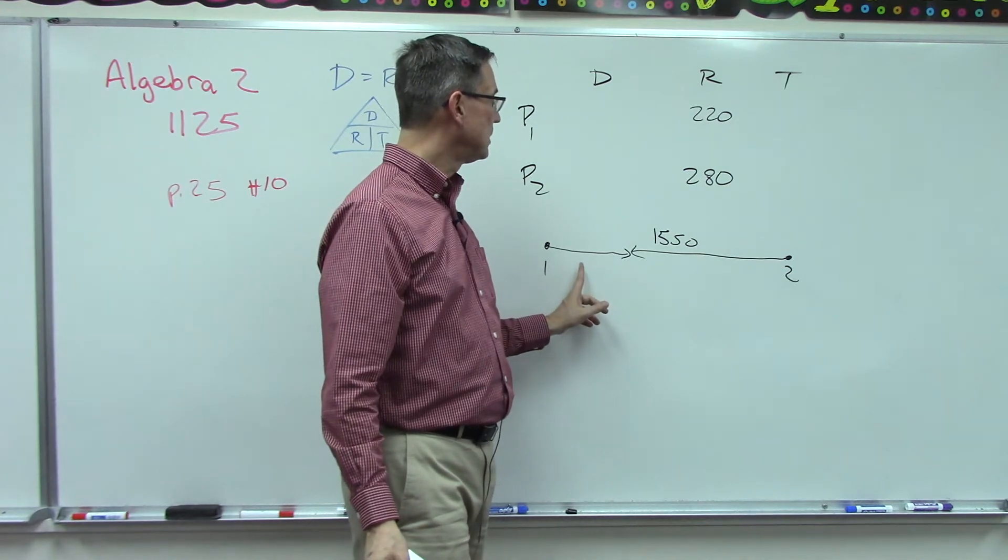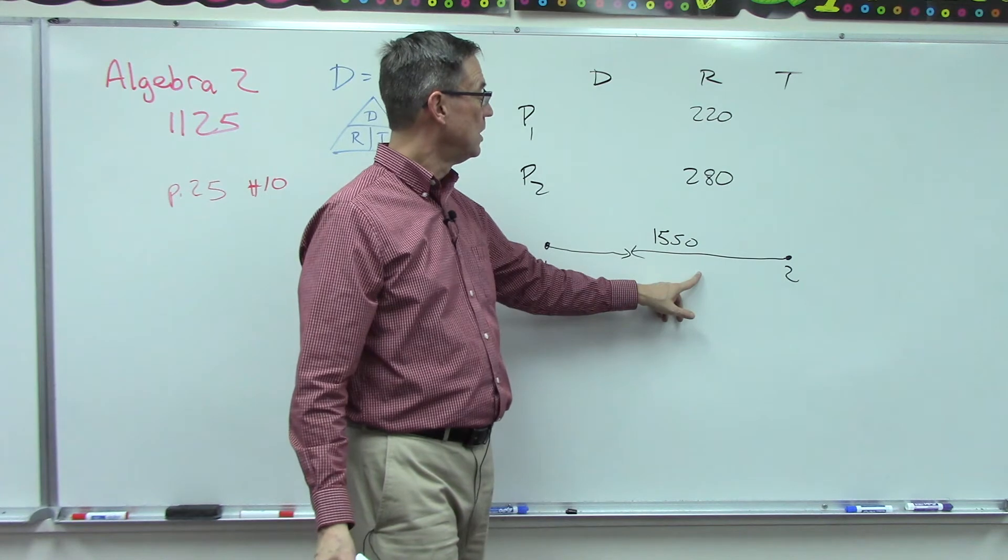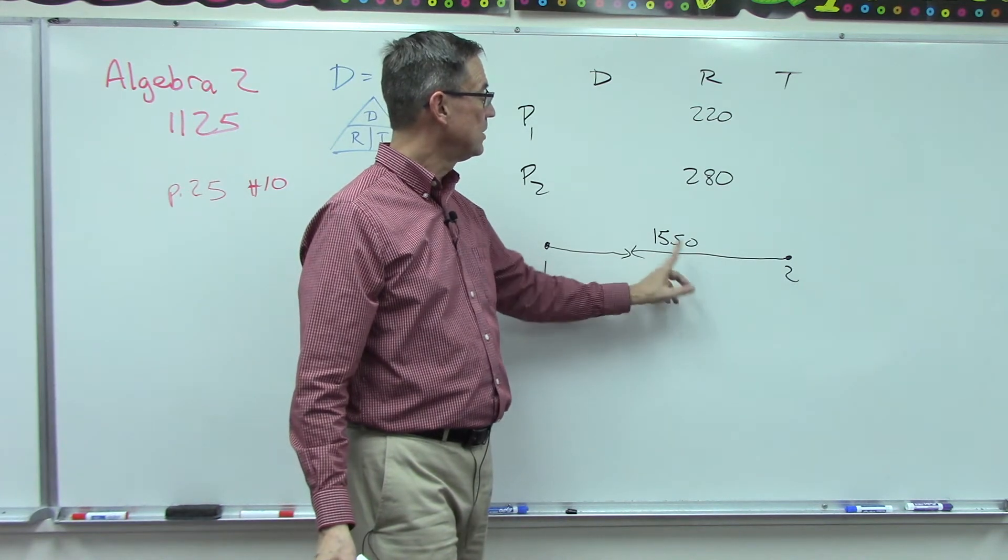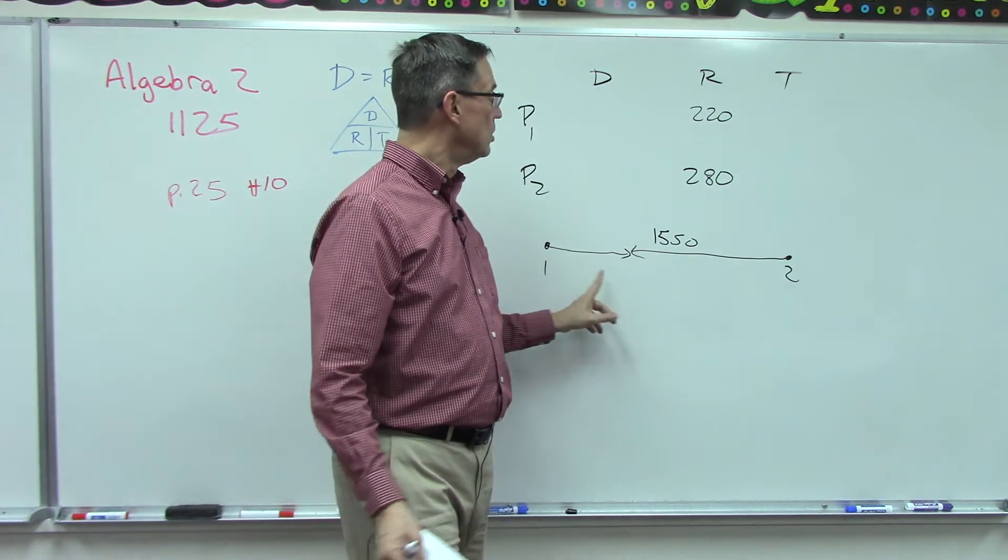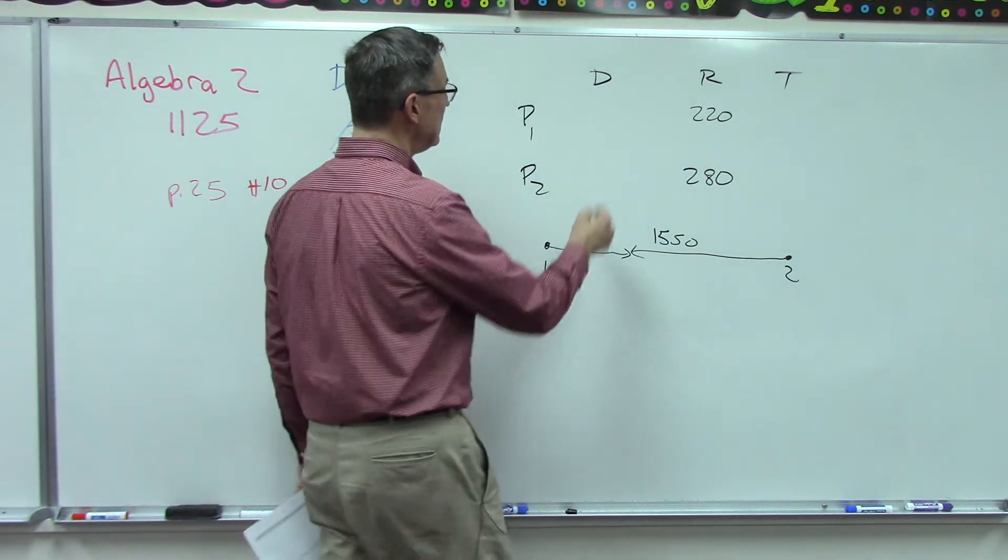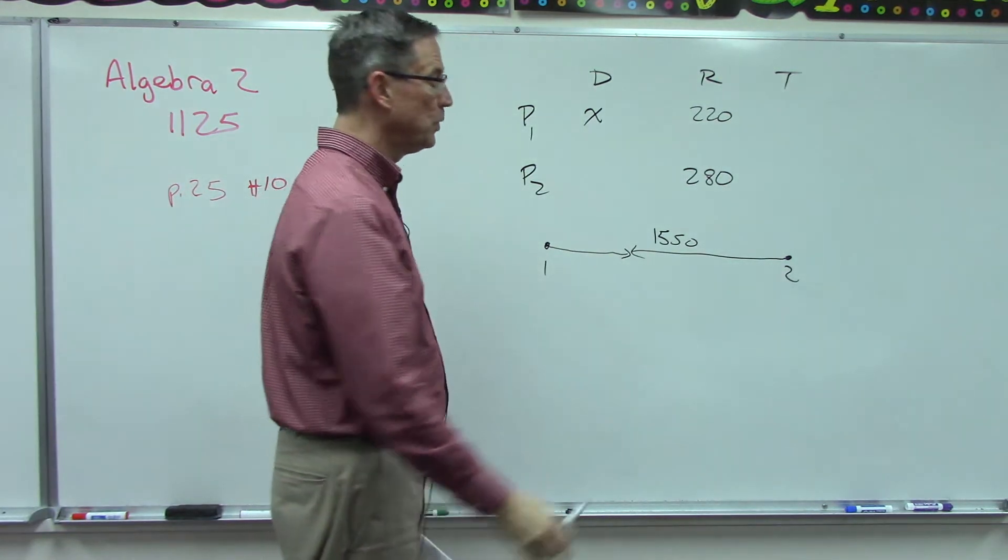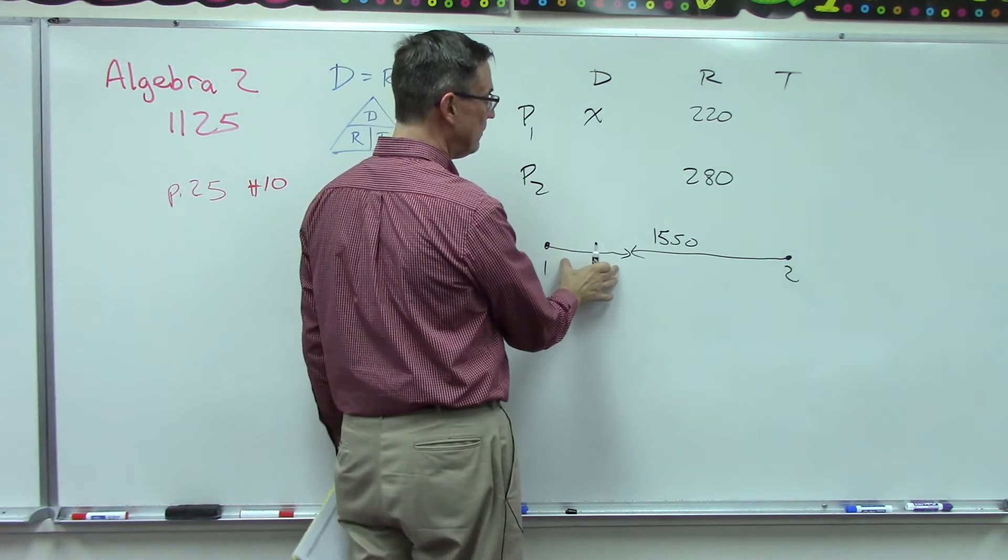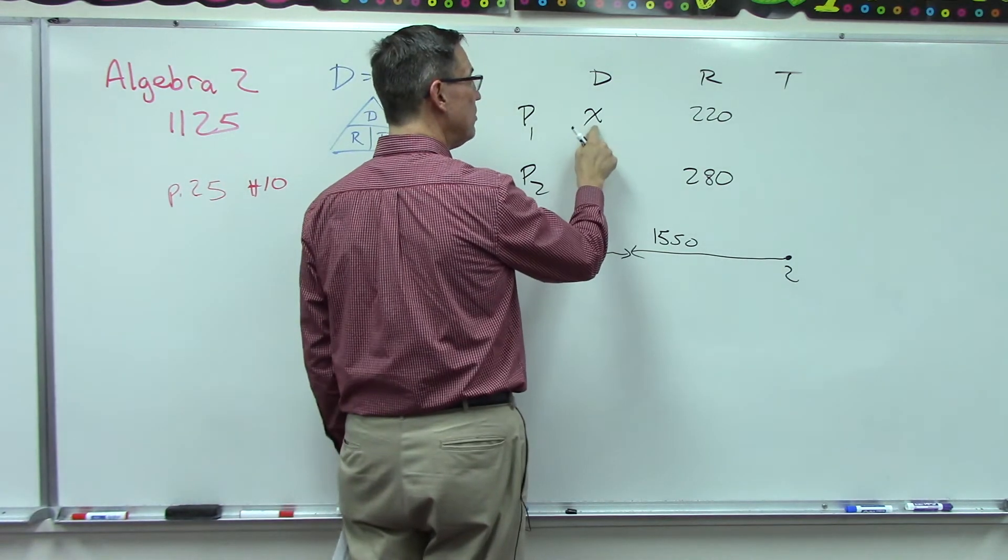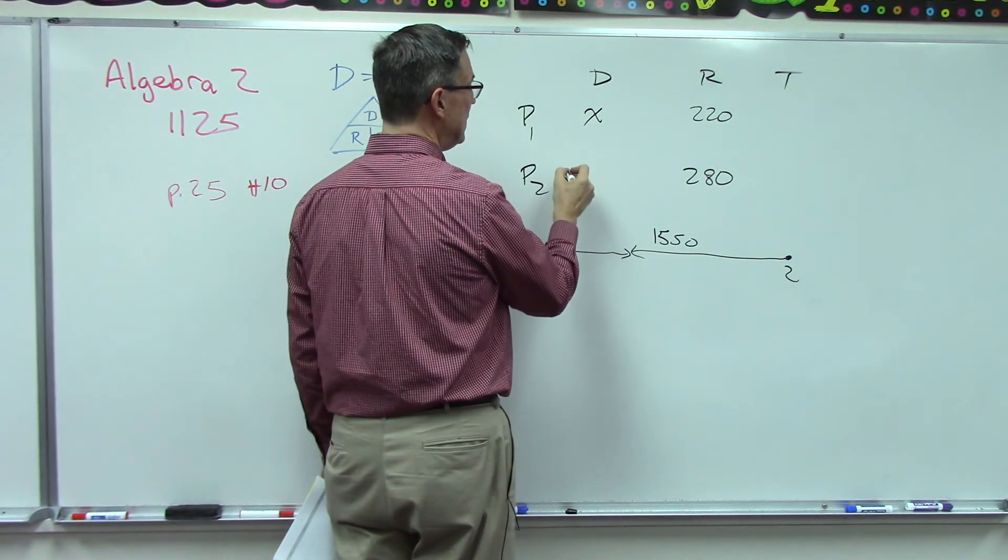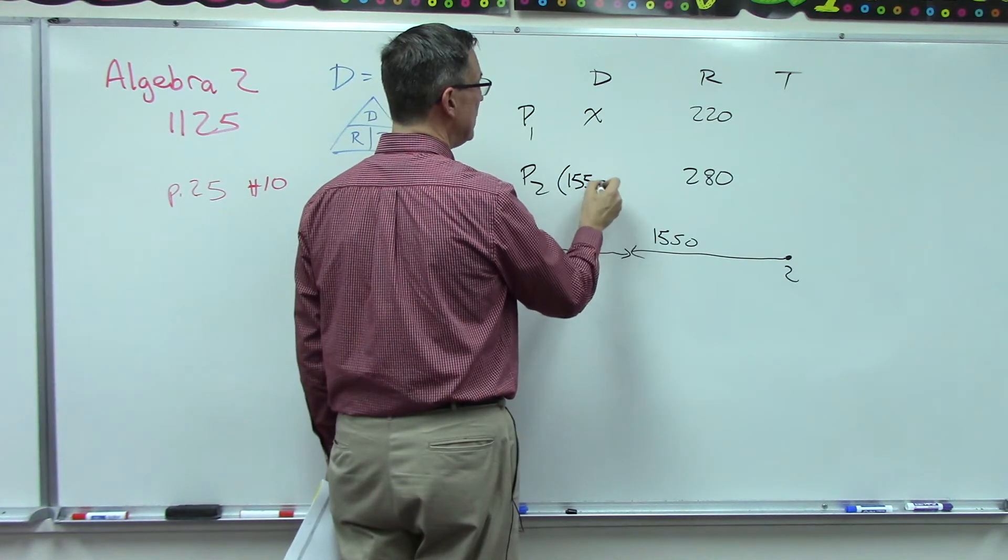What if I had said that this was 700, then how would you figure out what this was? Well you'd say okay I need to subtract 700 from that, so that would be 850, and you are correct. So what we're going to do is let the first distance be x because we don't know if it's 550 or 750.